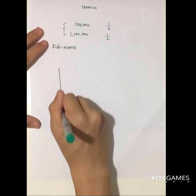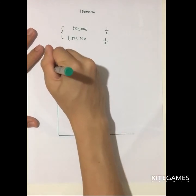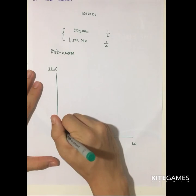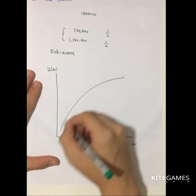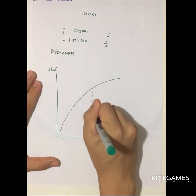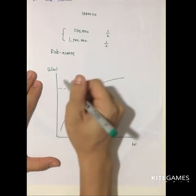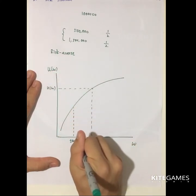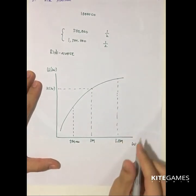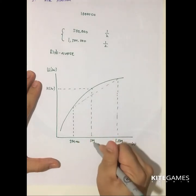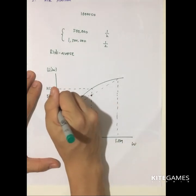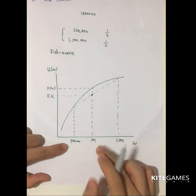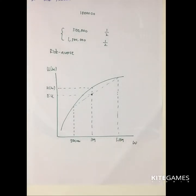How do we model risk aversion in economics? We write an indirect utility function with utility on one axis and wealth on the other — indirect because wealth doesn't directly give utility; you use wealth to buy goods that give utility. We model this with a concave utility function. At one million you get a certain utility; linking the utilities at 500k and 1.5 million, the expected utility lies below the utility of the certain value of one million.